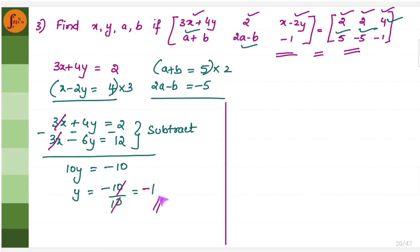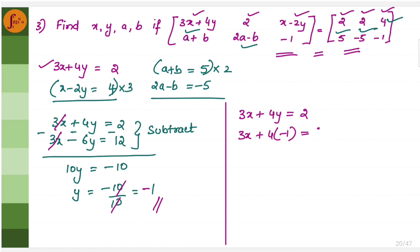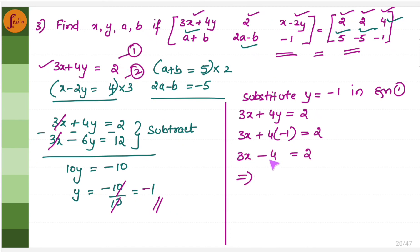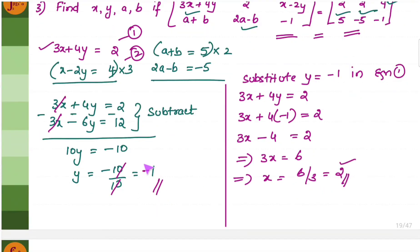Now that y equals minus 1, we substitute into the first equation 3x plus 4y equals 2. We get 3x plus 4 into minus 1 equals 2, so 3x minus 4 equals 2, meaning 3x equals 6, thereby x equals 6 by 3, which is 2. So x equals 2 and y equals minus 1.